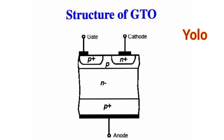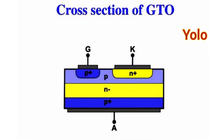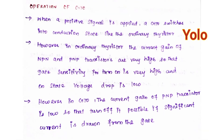When a positive signal is applied, a GTO switches into conduction state like an ordinary thyristor. However, in an ordinary thyristor the current gain of the NPN and PNP transistors is very high, so gate sensitivity for turn-on is very high and on-state voltage drop is low. In a GTO, the current gain of the PNP transistor is low, so turn-off is possible if significant current is drawn from the gate.